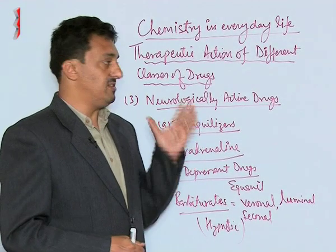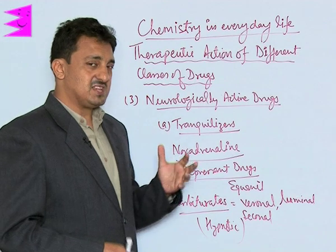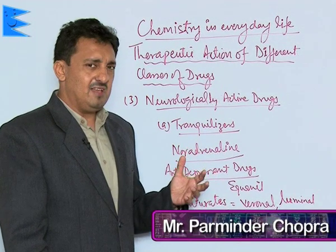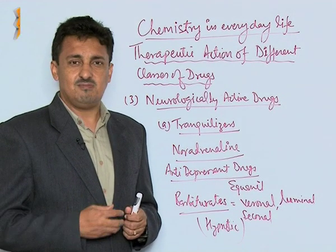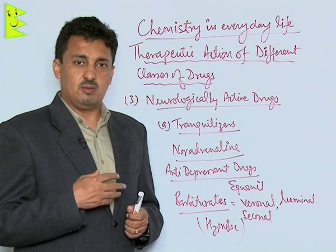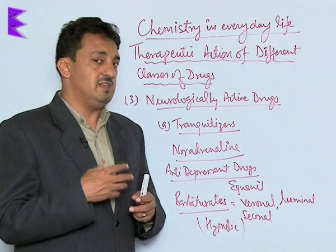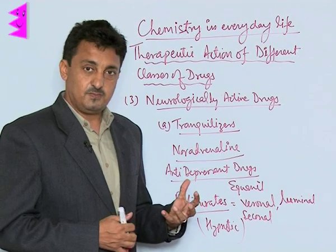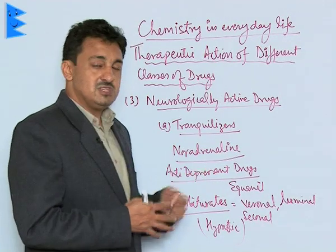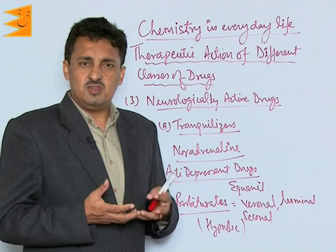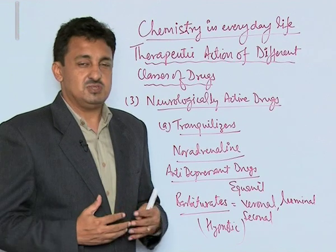The third category of drugs on the basis of their therapeutic actions are neurologically active drugs. The first category of neurologically active drugs are tranquilizers. Tranquilizers are those chemical substances used to cure mild or severe mental diseases, mental depressions, and hypertension. It has been realized that there is a hormone or chemical messenger called noradrenaline which is mainly responsible for keeping us active and giving us a feeling of well-being. When its level goes down in the blood, we feel depressed.